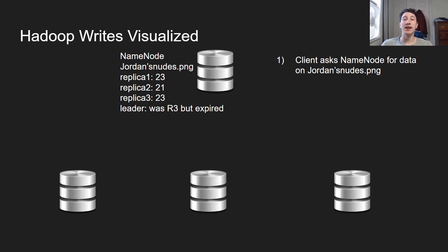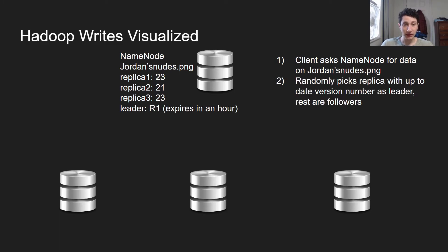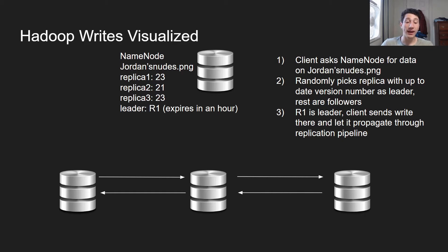To actually visualize this — let's say I'm trying to write jordansnudes.png. We've got three replicas: replica 1, 2, and 3. The first thing is I'm going to ask the name node what chunks are holding it and find out what the leader was. I find out that the leader was replica 3 because it has version 23 of the file there, but that's since expired. So we're going to randomly pick a replica with an up-to-date version number as the leader. The new leader is going to be R1, with a lease expiring in an hour — replica 1 also has version 23. Now we contact replica 1, send the write through it, and let it propagate through the pipeline.